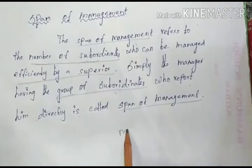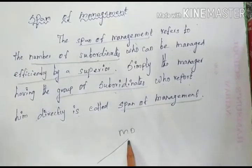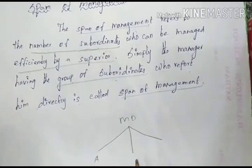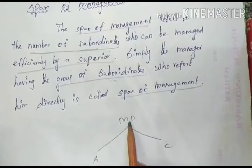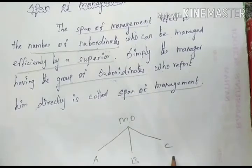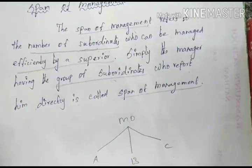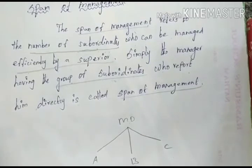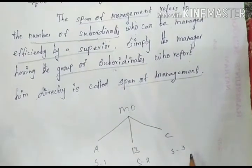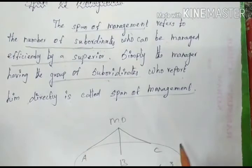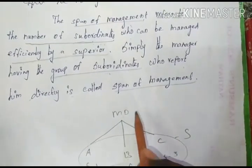For example, there is one MD — Managing Director. Under this MD, there are workers A, B, and C. So subordinate one is A, subordinate two is B, subordinate three is C. So in this structure, there are three subordinates.